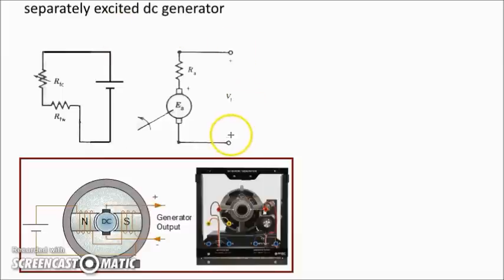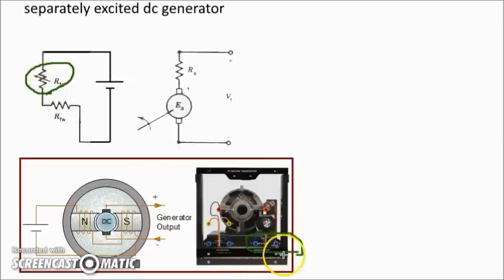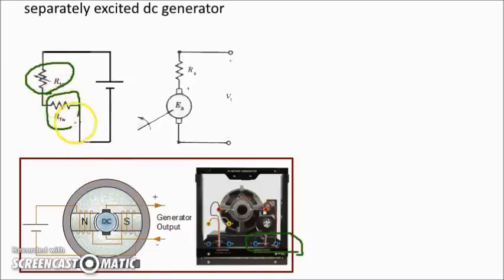On the top we can see the circuit diagram of this generator. RFC is the rheostat that you can see here. From the terminal of the machine we can change the resistance of the rheostat in order to control the amount of current that runs through the field winding. By changing field winding current, we can change the flux density inside the machine. RFW is the resistance of the field winding. For the armature, we have another resistance called Ra, which represents the resistance of the armature wires.